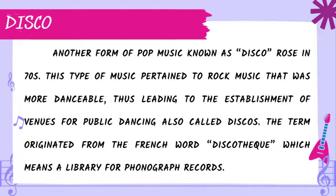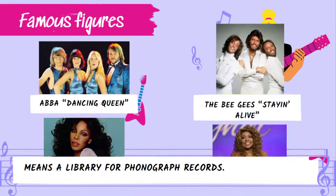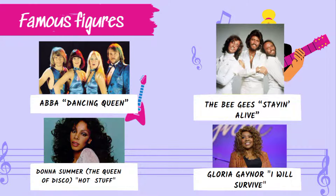Another form of pop music known as Disco rose in the 1970s — a more danceable rock music that led to the establishment of public dancing venues called Discos. The term originated from the French word 'discotheque,' meaning a library for phonograph records. Famous figures of Disco include ABBA (Dancing Queen), the Bee Gees (Staying Alive), Donna Summer — known as the Queen of Disco (Hot Stuff) — and Gloria Gaynor (I Will Survive).